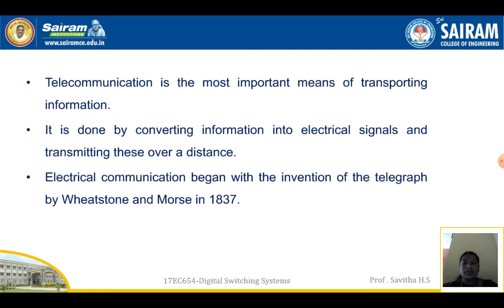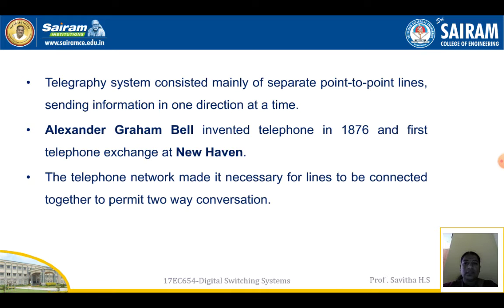Electrical communication began with the invention of the telegraph by Whitestone and Morse in 1837. The telegraphy system consisted mainly of separate point-to-point lines sending information in one direction at a time. Alexander Graham Bell invented the telephone in 1876 and the first telephone exchange at New Haven. The telephone network made it necessary for lines to be connected together to permit two-way conversation.